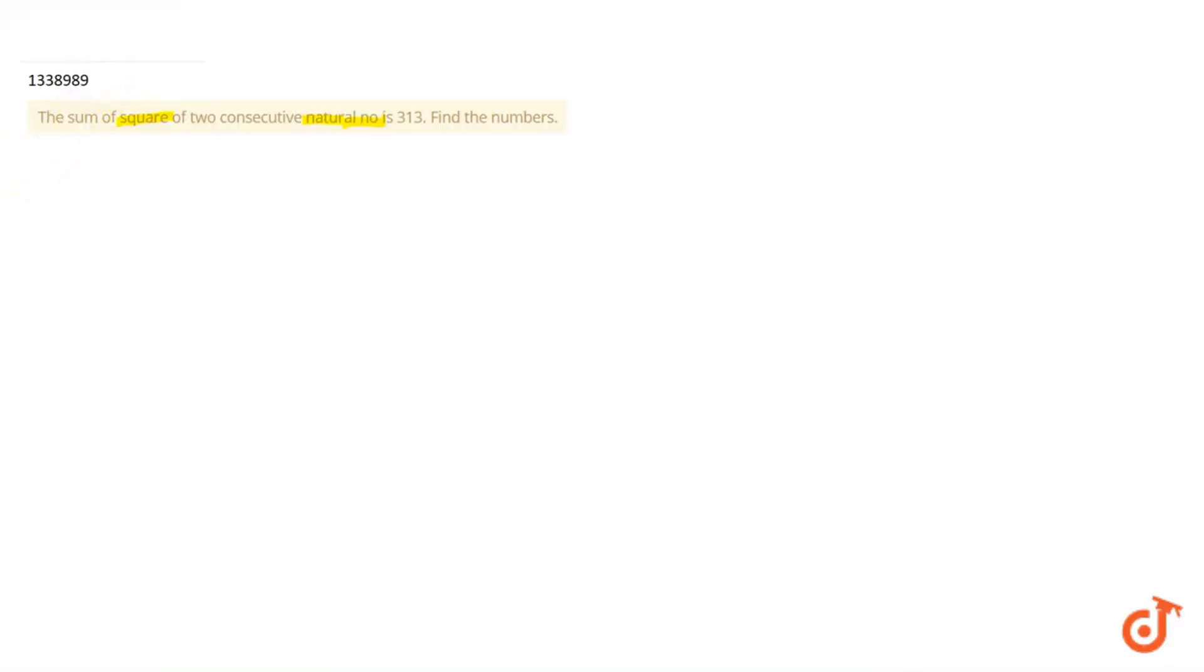So basically what we have been given is the sum of square of two consecutive natural numbers is 313. Now we need to find those numbers.